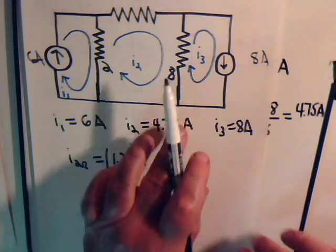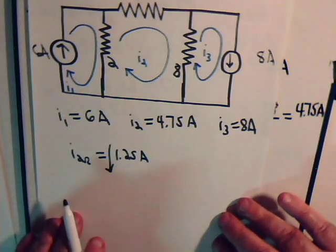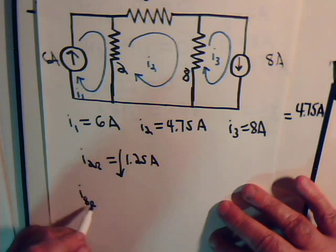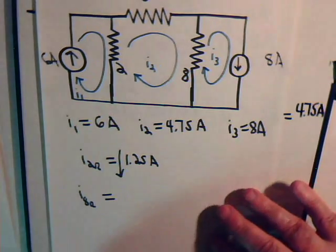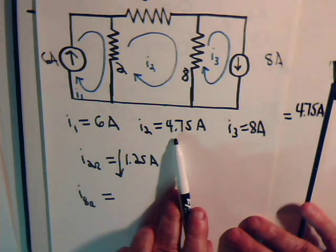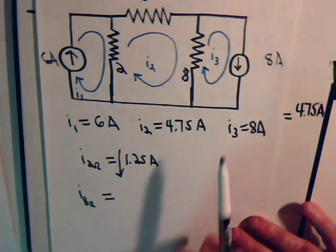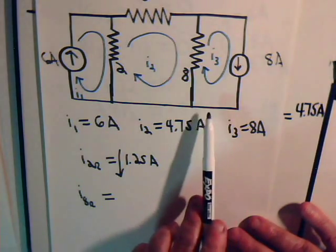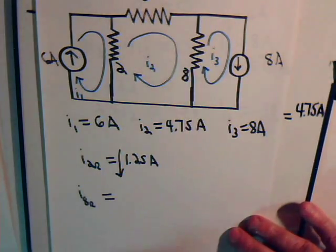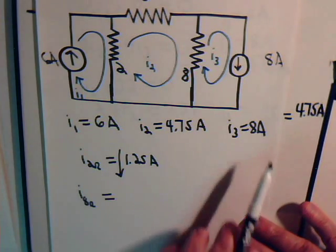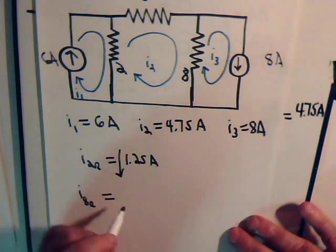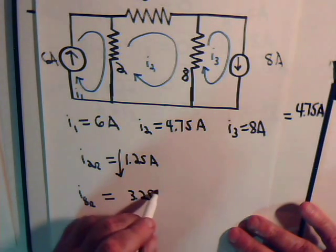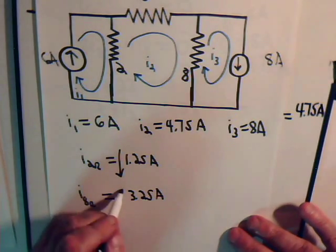And now for this resistor, here we have 4.75 from current I2 that's going down. Here we have 8 amps from current I3 that's flowing up. So we have 8 minus 4.75 that's 3.25 amps and that's flowing upward.